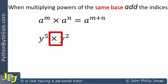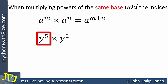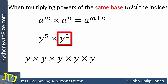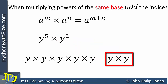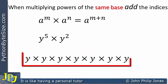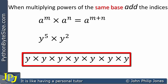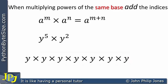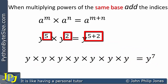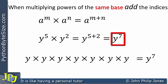Consider y to the power of 5 multiplied by y to the power of 2. In both cases the base is y. This means we have y written down 5 times all multiplied together, and y written down twice and multiplied together. Counting all the y's, there are 7 of them, so we write down the base and put the index as 7. We take the 5 and the 2, add them together, and that gives us y to the 7.